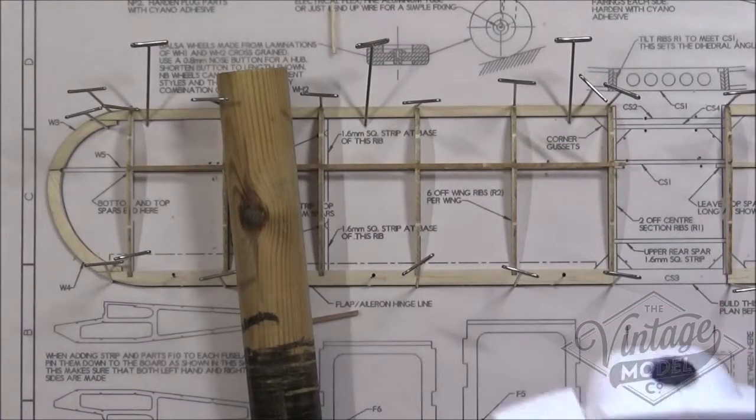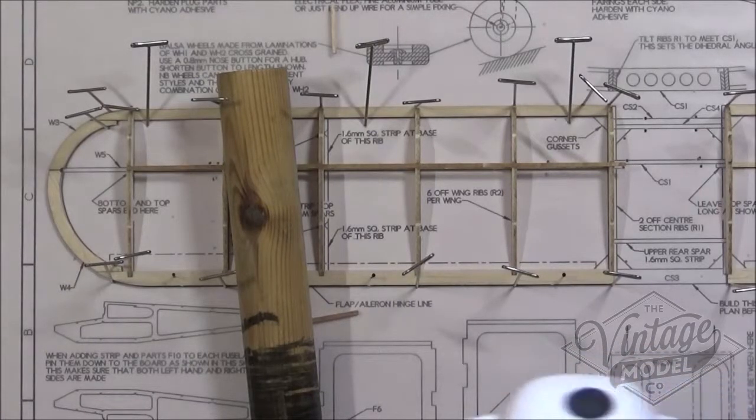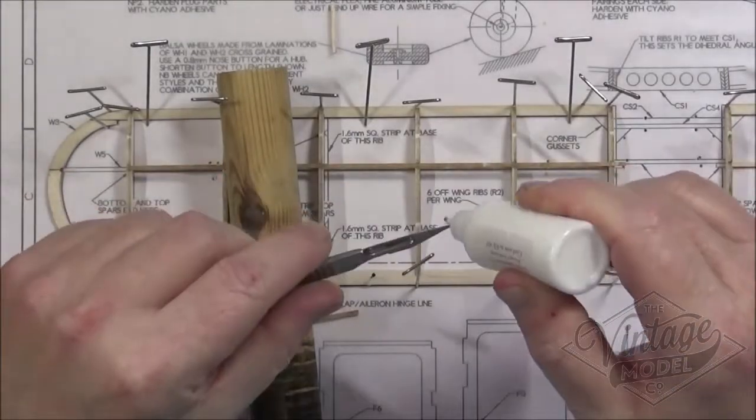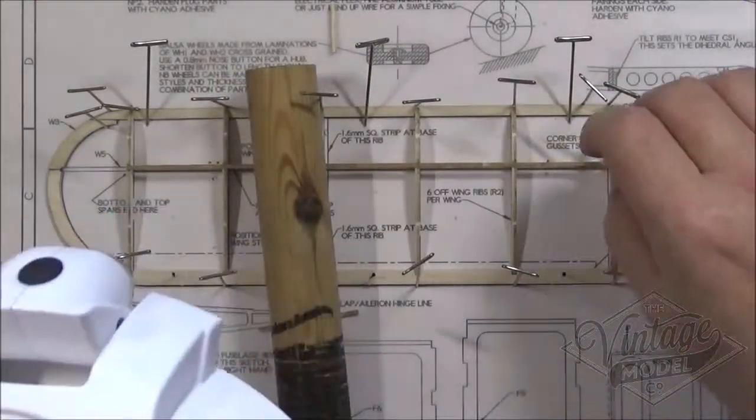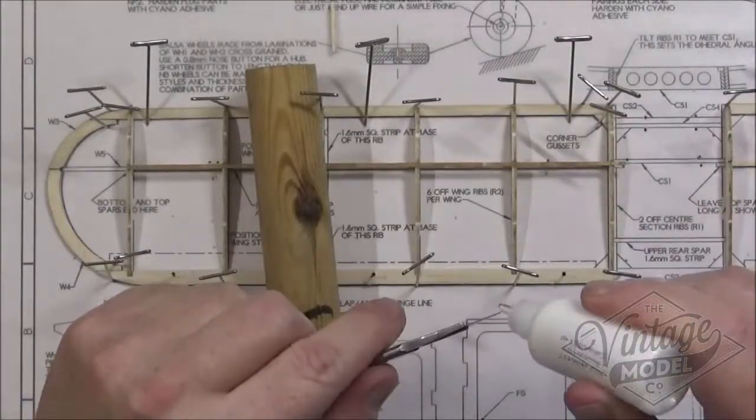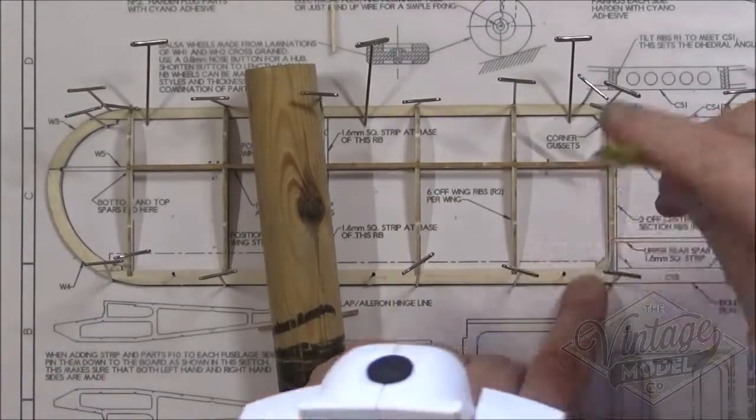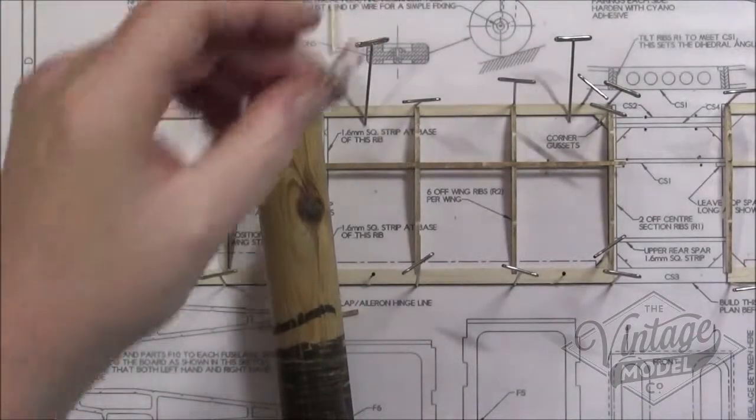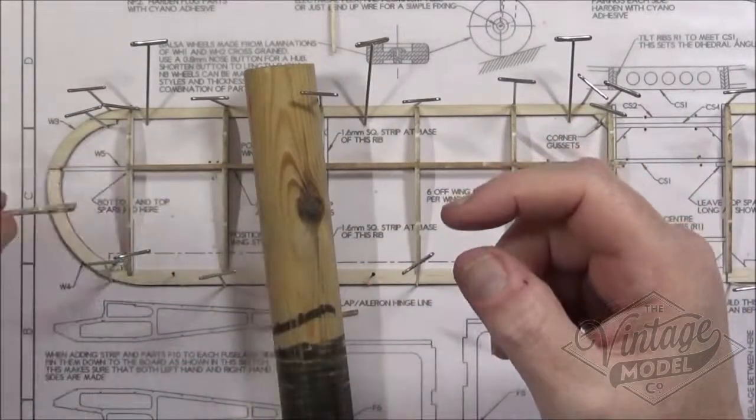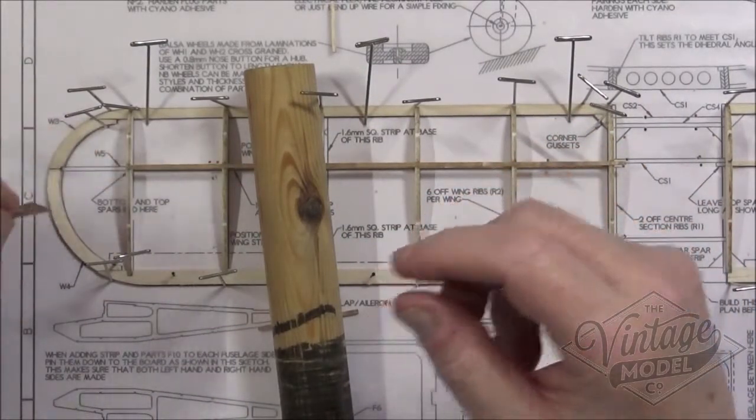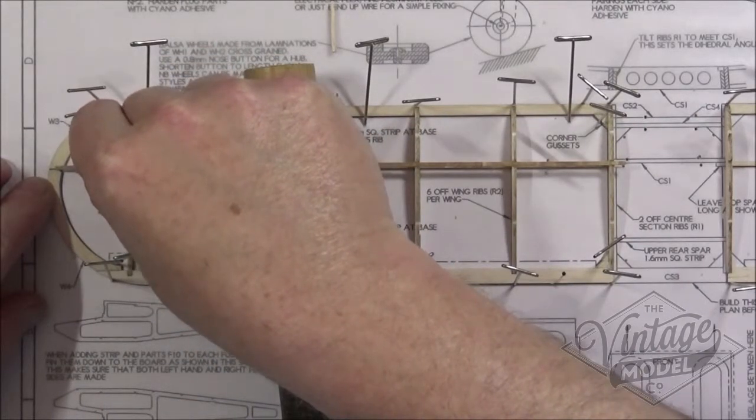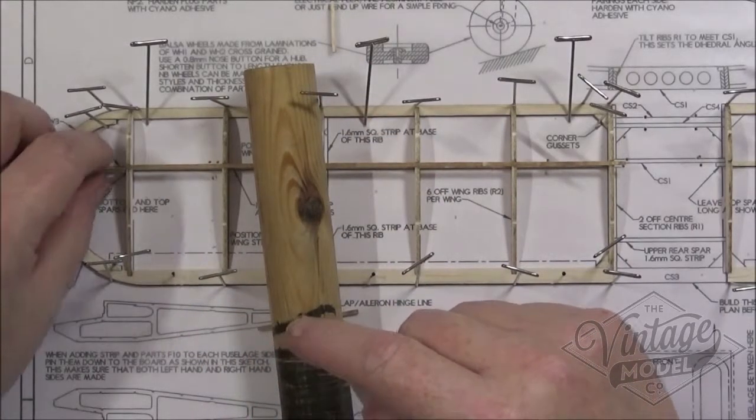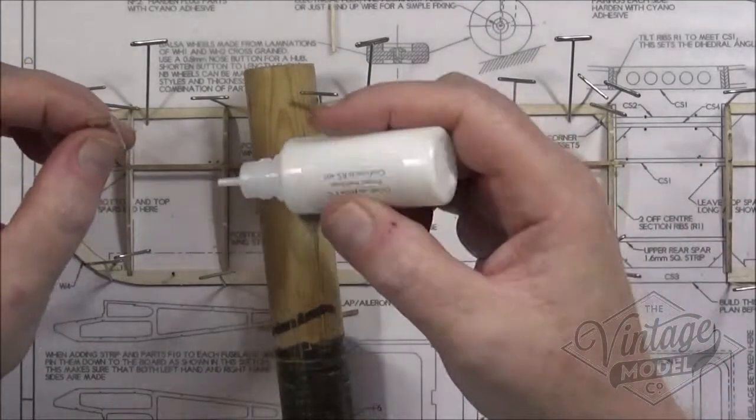And while we leave that to go off we can install the corner gussets. And then we can move on to W5, which is this outer support here. And now the glue has a chance to dry I'll just test fit it. Yep that fits okay. So we can go ahead and glue it.